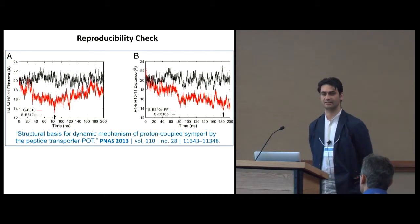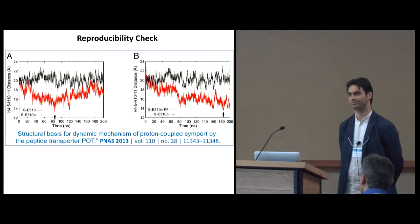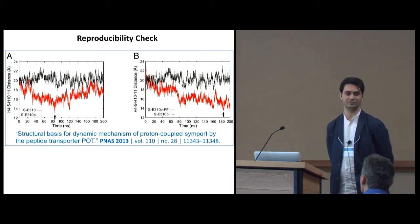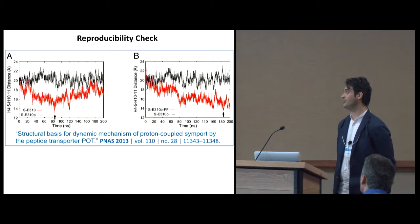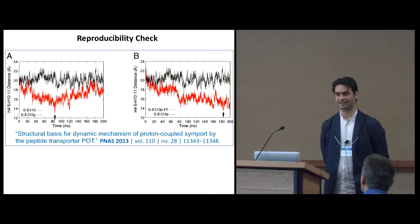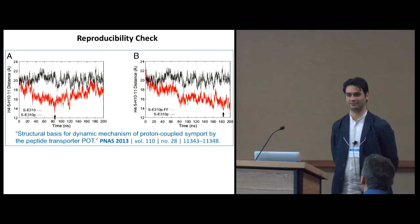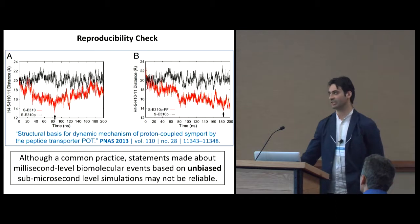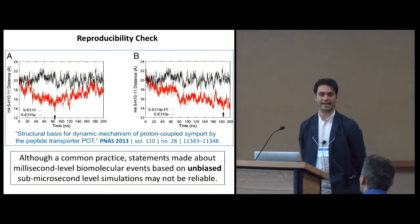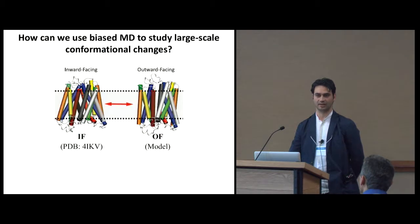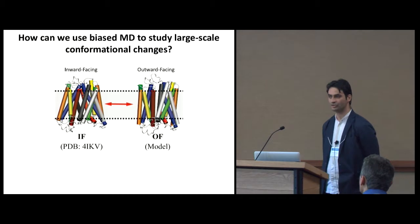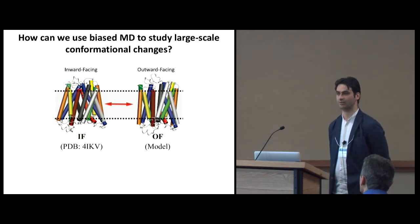This is a common practice — there is a published reference for this exact protein and conditions showing 200-nanosecond simulations as evidence of important discovery. But it's not really accurate. To go beyond this, we have to go beyond microsecond-level or sub-microsecond-level simulations and use biased molecular dynamics for proteins undergoing slow large-scale conformational changes.